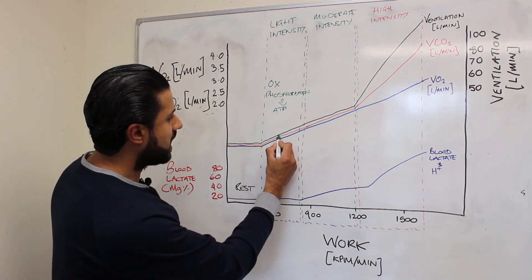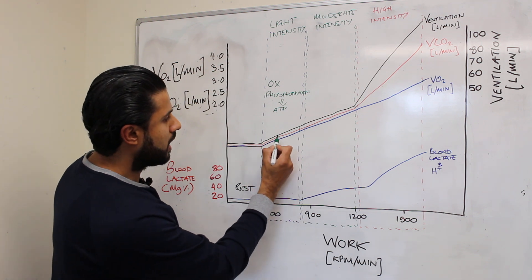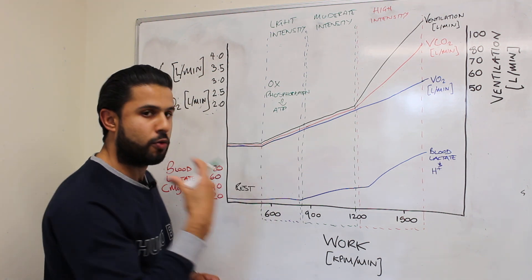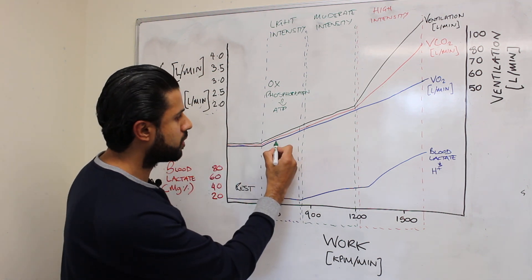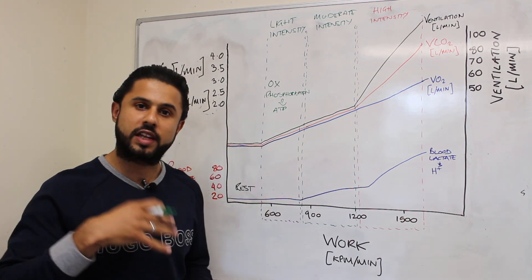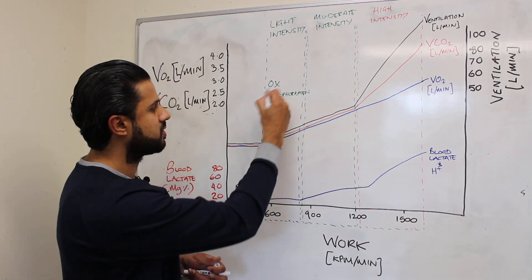Now what we can see is ventilation is matching the need to blow off or breathe out CO2 but also the need for oxygen to get into the tissues for this process to occur.